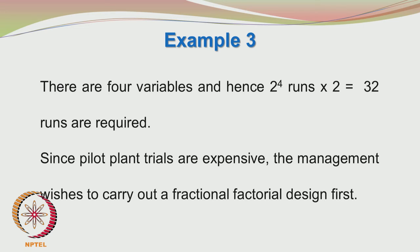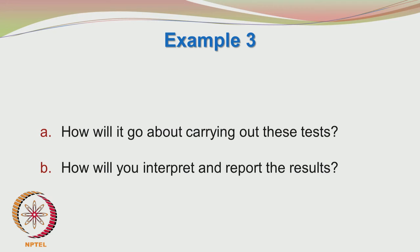Since there are 4 variables, a full 2⁴ design requires 16 runs, and with 2 repeats that means 32 runs. Pilot scale studies are expensive, so management may consider running only a fraction of those experiments. Factorial designs are structured so it is possible to construct a fractional design and implement it — the key question is how to carry out these tests and how to interpret the results.